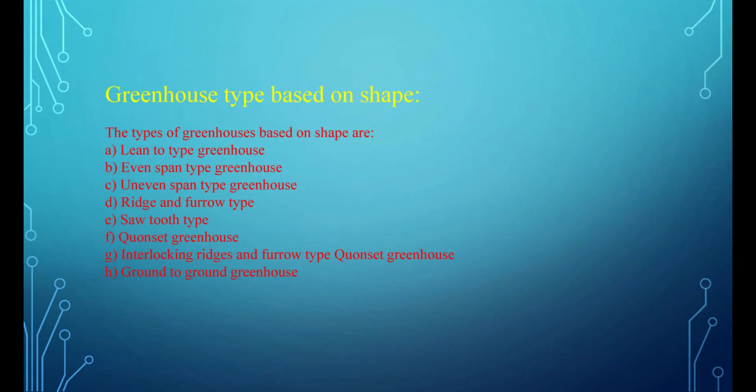Greenhouse types based on shape include: A. Lean-to-type, B. Even-span-type, C. Uneven-span-type, D. Ridge and furrow type, E. Sawtooth type, F. Quonset greenhouse, G. Interlocking ridges and furrow type Quonset greenhouse, and H. Ground-to-ground greenhouse.